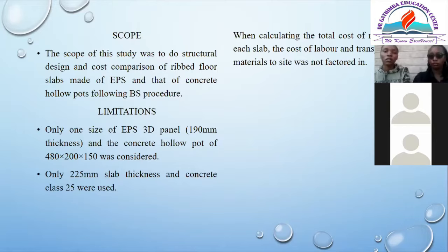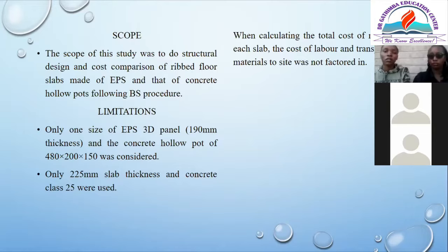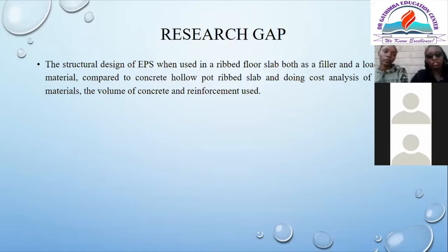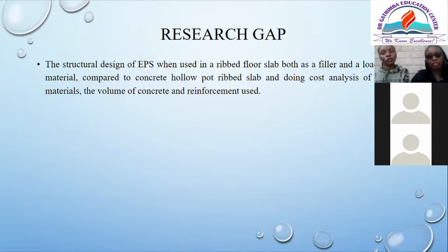For the literature review, it provides information on properties and tests of materials used in concrete works, and background on the properties and applications of both EPS and concrete hollow pots. EPS is a plastic material used in load-bearing walls, slabs, and other construction structures. A concrete hollow block is one of several precast concrete products used in construction — it can be used in walls, ceilings, roofs, and slabs. The research gap is the structural design of EPS when used in the ribbed slab both as a filler and load-bearing material, compared to concrete hollow pots, including a cost analysis of filler materials, volume of concrete, and reinforcement used.